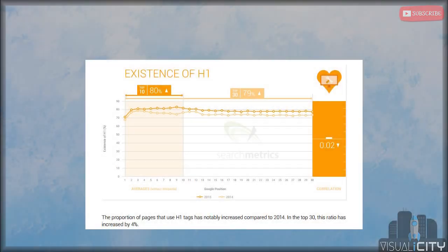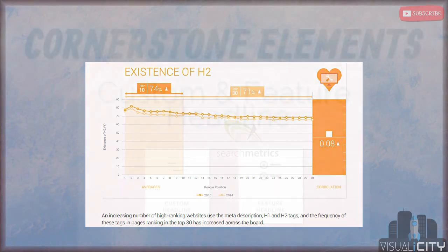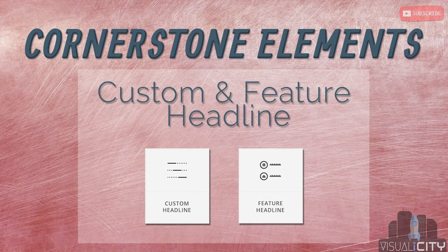As web developers, we're obsessed with ranking in Google. And according to a Searchmetrics 2015 study, 80% of websites listed in the top 10 for popular keywords had an H1, and 74% of websites listed in the top 10 had an H2. So for Cornerstone users, this makes custom and feature headlines extremely important — we should be using them on all of our pages.